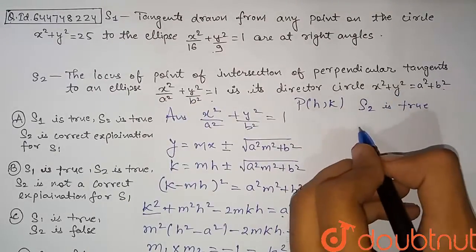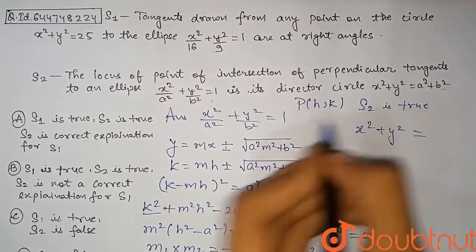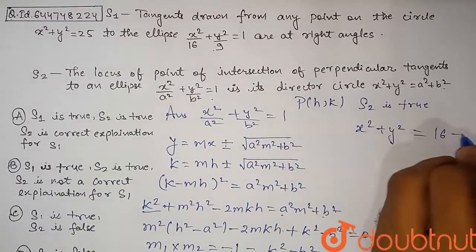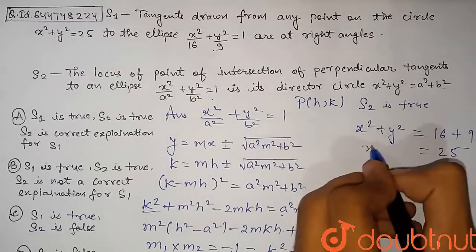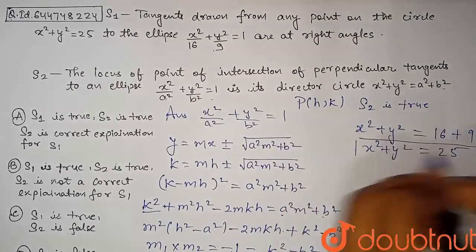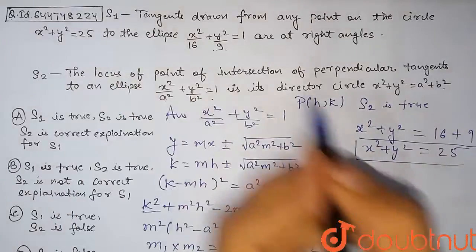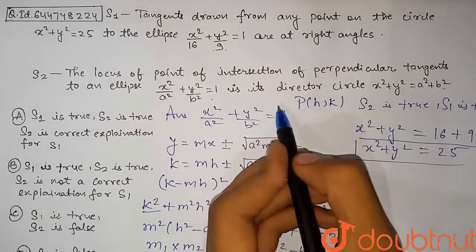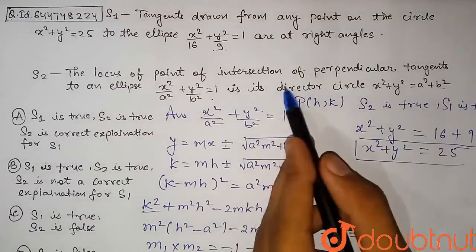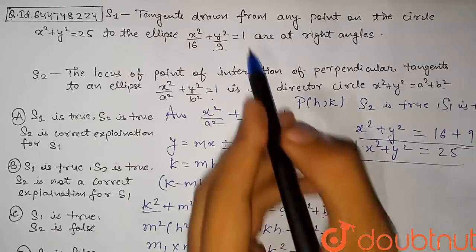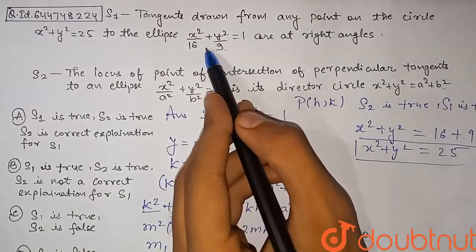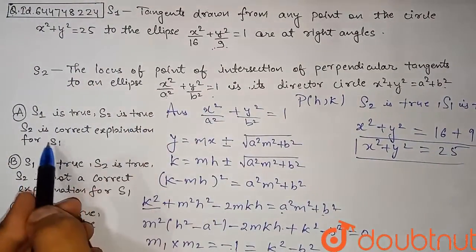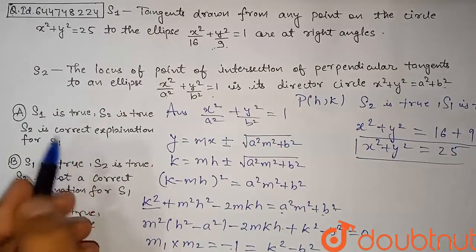For the ellipse x²/16 + y²/9 = 1, the director circle is x² + y² = a² + b², where a² = 16 and b² = 9. So the director circle is x² + y² = 16 + 9 = 25, which is exactly x² + y² = 25 — the circle given in Statement 1. Therefore Statement 1 is also true, and Statement 2 is the correct explanation for Statement 1. The answer is option A.